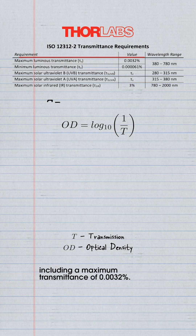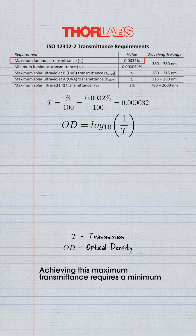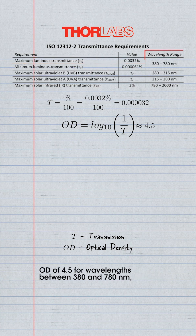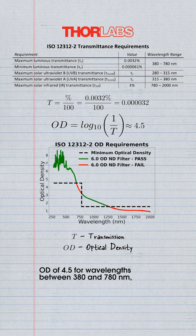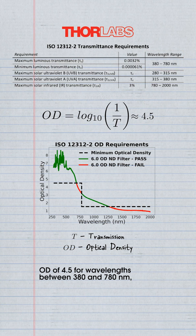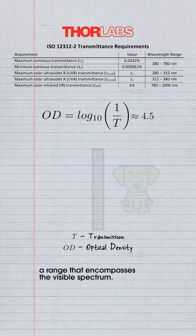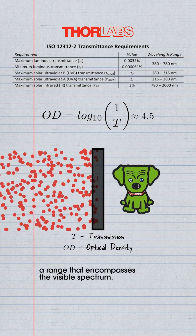Solar viewing glasses must meet a specific ISO standard, including a maximum transmittance of 0.0032%. Achieving this maximum transmittance requires a minimum OD of 4.5 for wavelengths between 380 and 780 nanometers, a range that encompasses the visible spectrum.